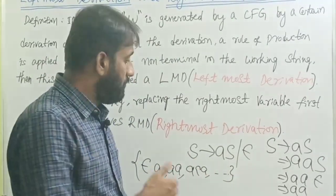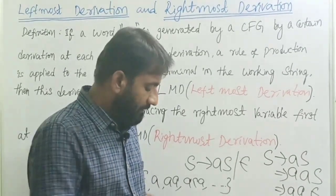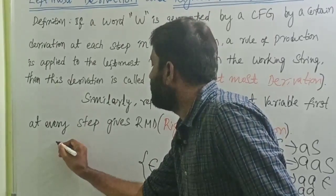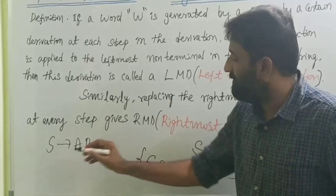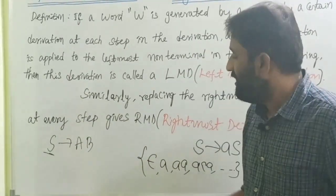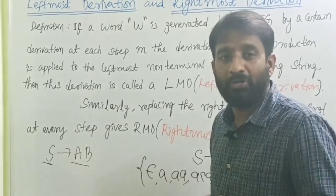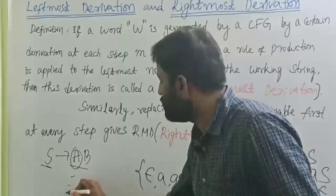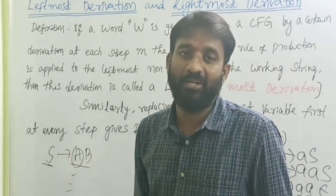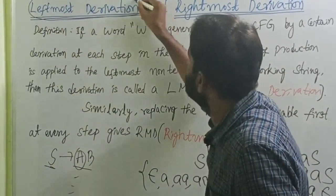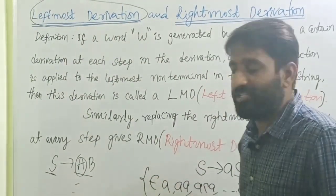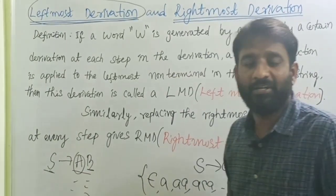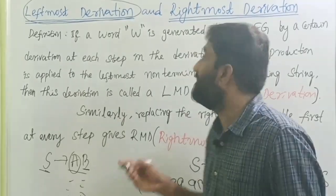The derivation process can differ. For example, consider the grammar S tends to AB, where the left-hand side contains a single non-terminal and the right-hand side has two non-terminals. If every time I replace the leftmost variable in the RHS by its production body, that derivation process is called leftmost derivation. If every time I replace the rightmost variable in the RHS, that is called rightmost derivation.